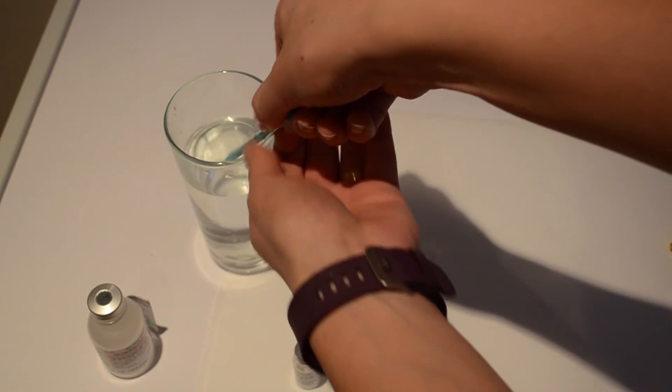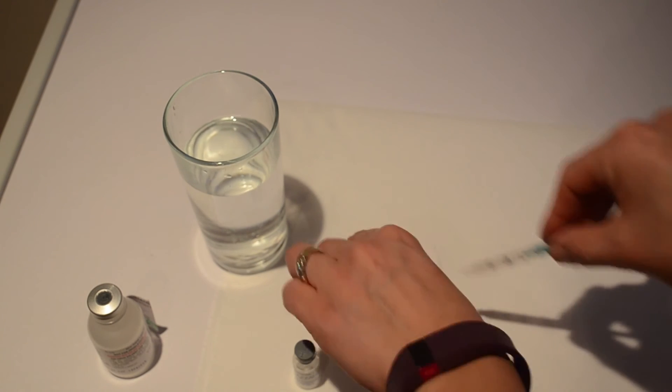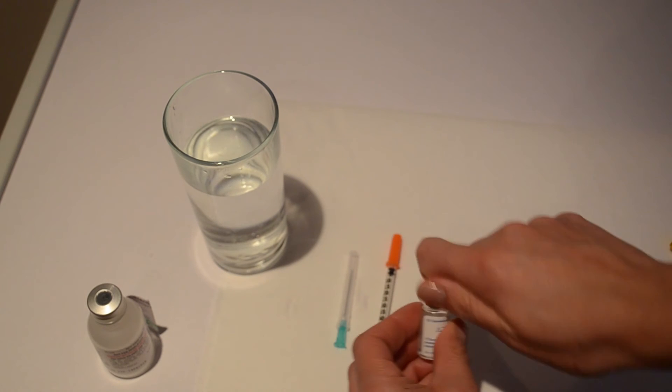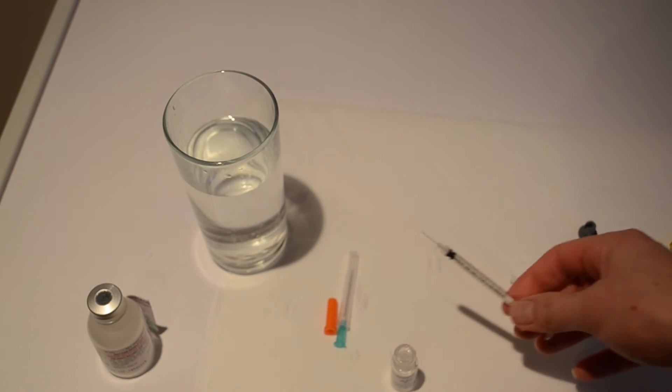So you're going to draw up your saline and you're going to put it with your needle into the bung. So once you've taken your cap off you can then draw up your AZZALURE.